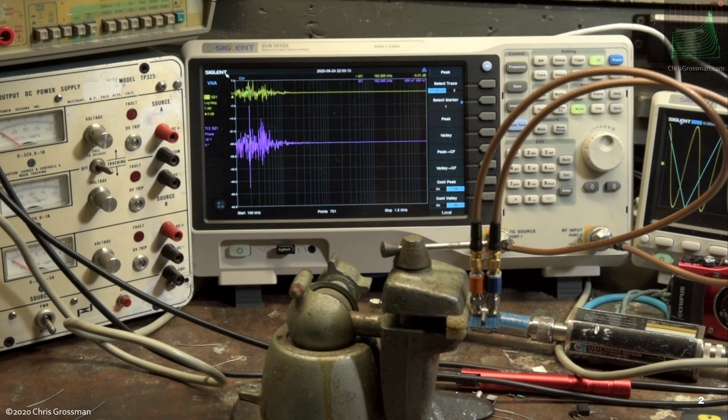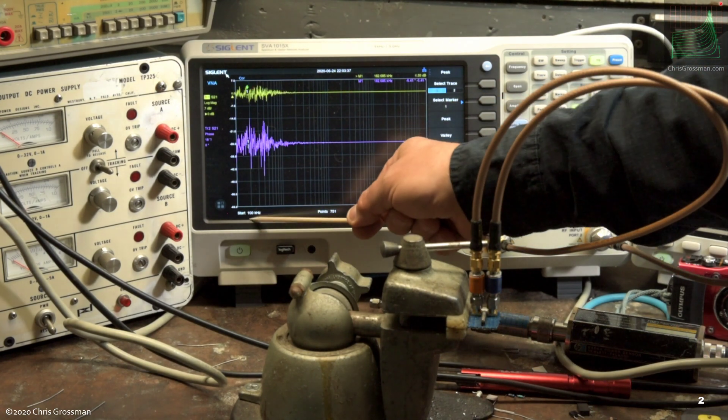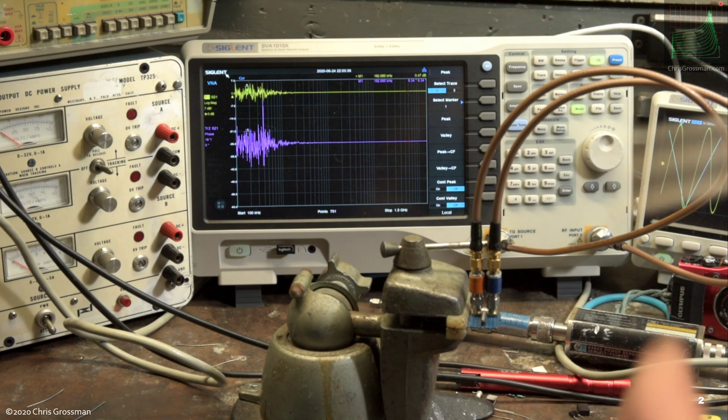One of the things I really like about this new firmware is the log frequency sweep. Besides making very pretty graphs when you measure components or amplifiers, it enables you to measure a very wide range of capacitors without changing settings. Right now I have the network analyzer on its widest sweep range from 100 kilohertz up to 1.5 gigahertz.